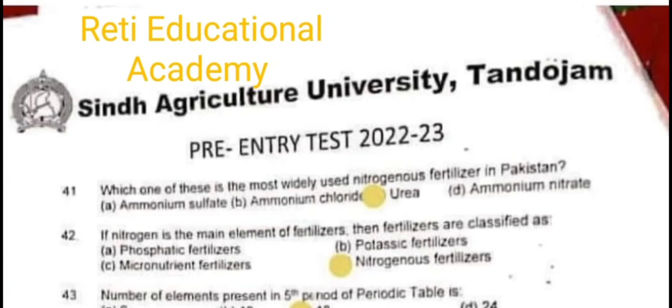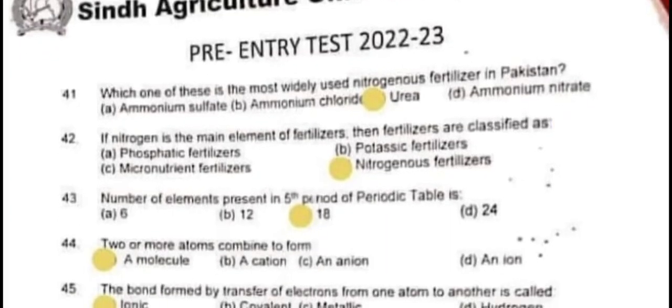Question number 41: The most widely used nitrogenous fertilizer in Pakistan is Urea. Question number 42: If nitrogen is the main element of fertilizers, then those fertilizers are classified as nitrogenous fertilizers. Question number 43: The number of elements present in the fifth period of the periodic table is 18.